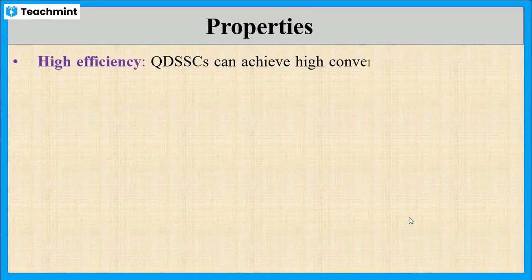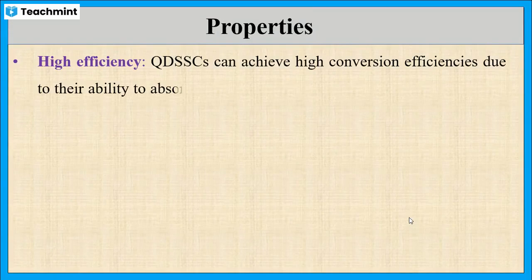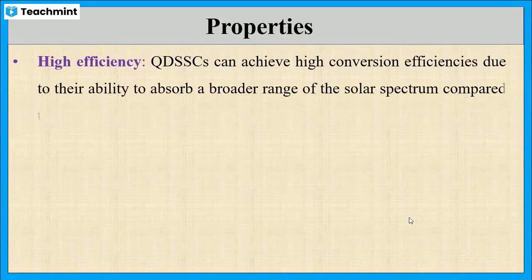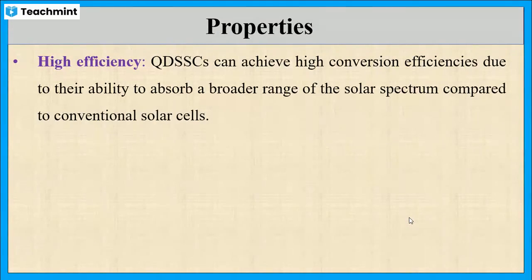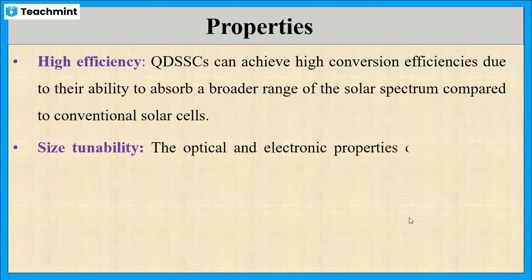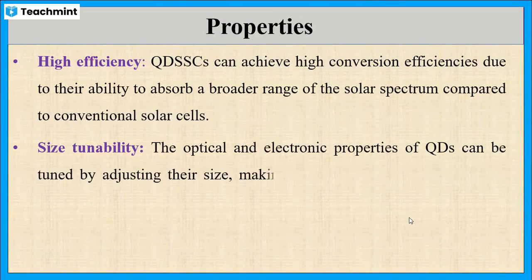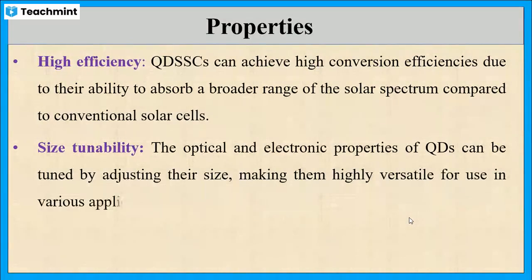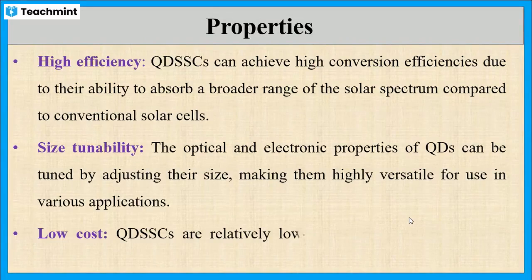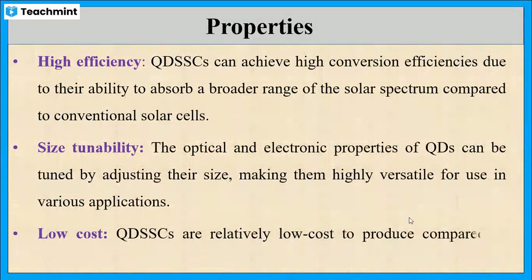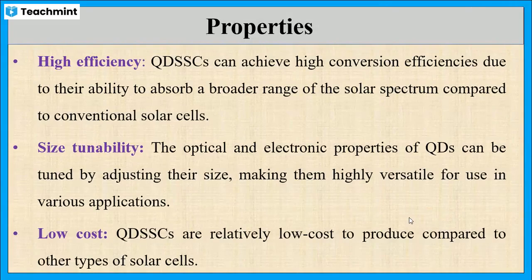Now let us see the properties of quantum dot solar cells. These have high efficiency compared to conventional solar cells in which silicon is used as primary material. The size of the quantum dot can be varied, which gives rise to excellent optical and electronic properties. The main important fact is their low cost — these are relatively cheaper than other types of solar cells.